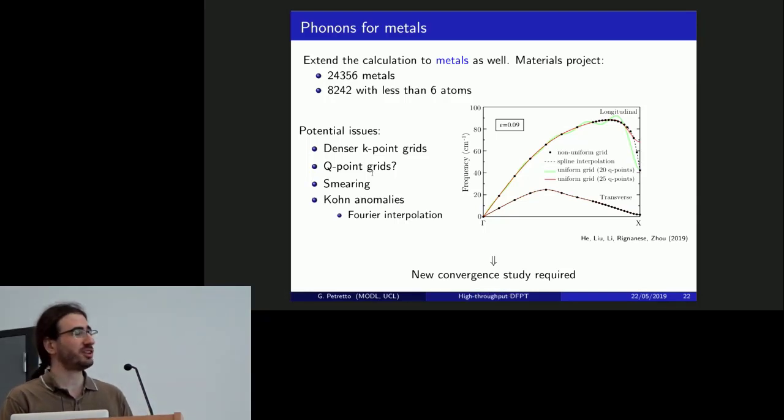Another thing is that everything that I've shown are for semiconductors that are much easier to deal with. The next step would be to take all the metals, which I expect will not go as smoothly as it has for the semiconductors. And well, since we obviously expect to have to use some denser k-point grids. Not really sure about the q-point mirroring, and dealing with Kohn anomalies will likely require a new convergence study. And we hope we'll manage to switch to high-throughput phonons for metals as well.